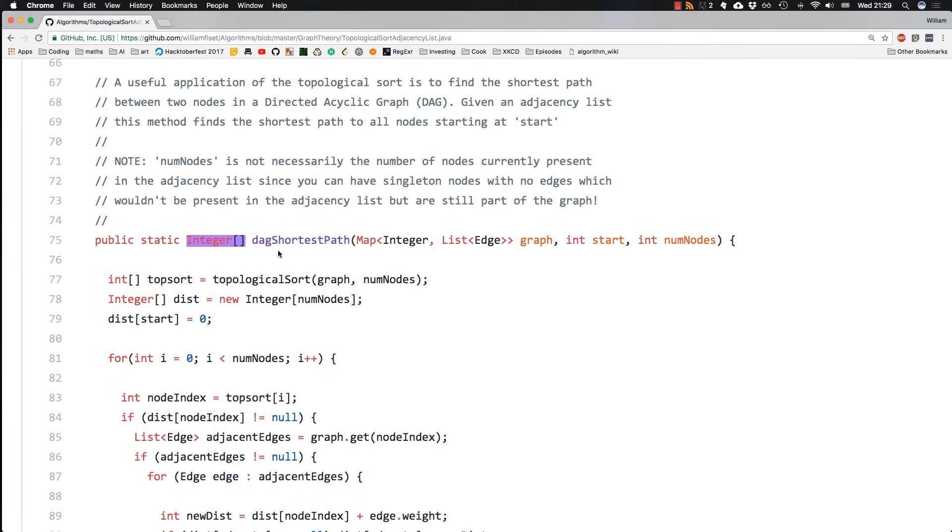And as input, we give it the graph we're working with as an adjacency list. Of course, the starting node and lastly, the number of nodes in our graph.